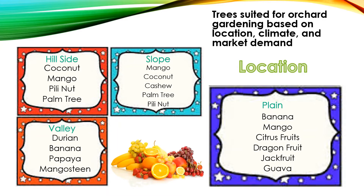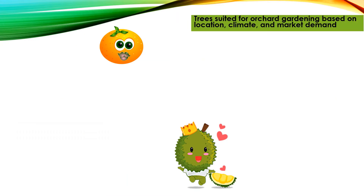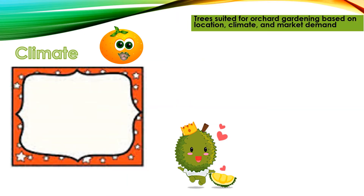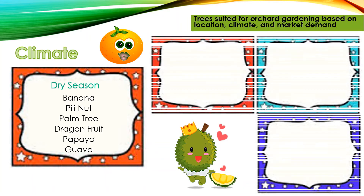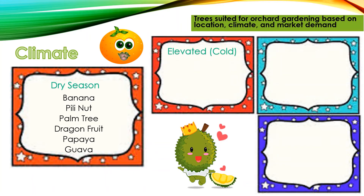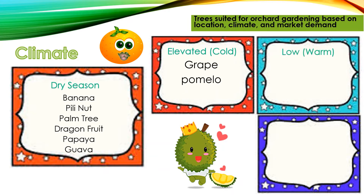Now let's talk about climate. During the dry season, it's better to plant banana, pili nuts, palm tree, dragon fruit, papaya, and guava. For elevated or cooler areas, grapes and pomelo are good choices.